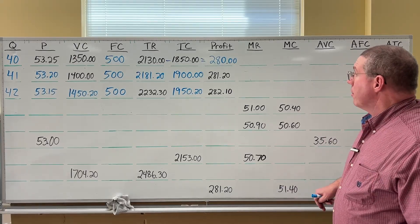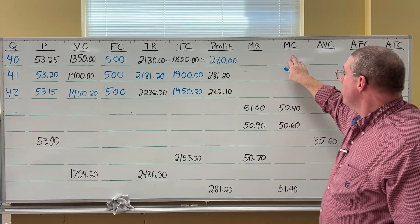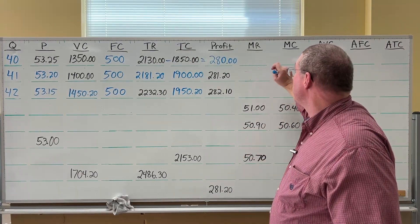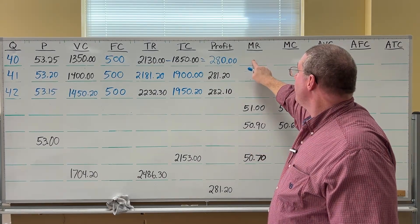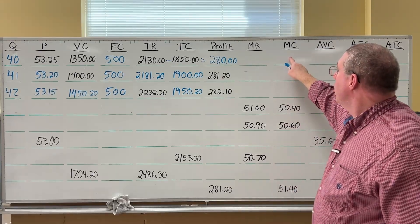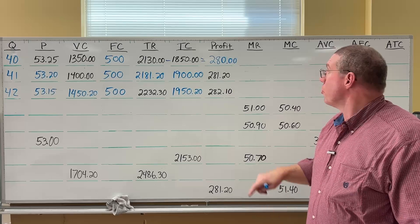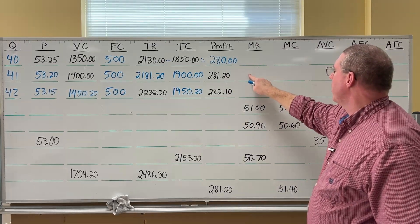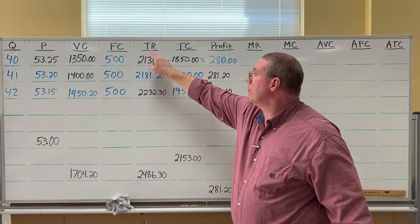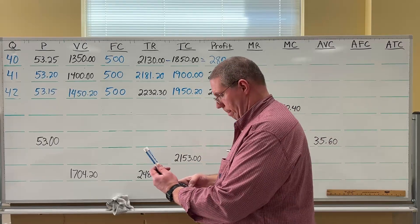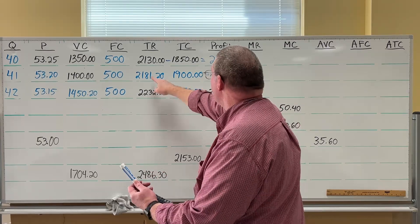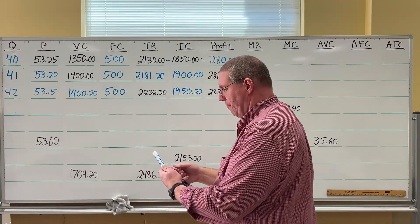Let's go to the table and fill in marginal revenue and marginal cost. All we need are total revenue and total cost. We won't be able to fill in the first row for MR and MC because we need the previous row's values. So we jump to Q=41: marginal revenue for 41 is total revenue for 41 minus total revenue for 40 — $2,181.20 minus $2,130 — that's $51.20. So the marginal revenue of the 41st unit is $51.20.